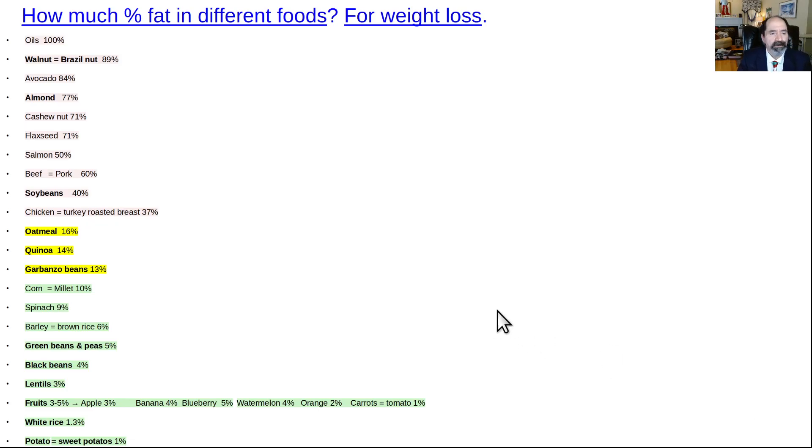So there's some surprises here. First of all, oil is a terrible food. It's 100% fat. But nuts are much fatter than people realize. Walnuts and Brazil nuts, about 89% fat. Almonds, about 77% fat. Cashew nuts, 71% fat.